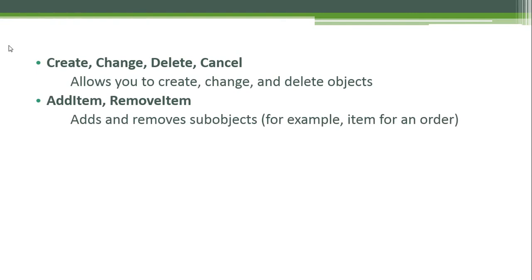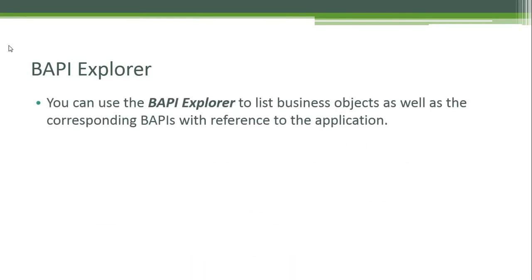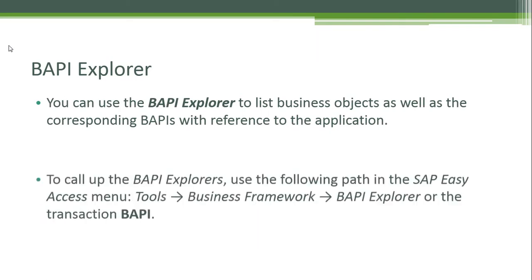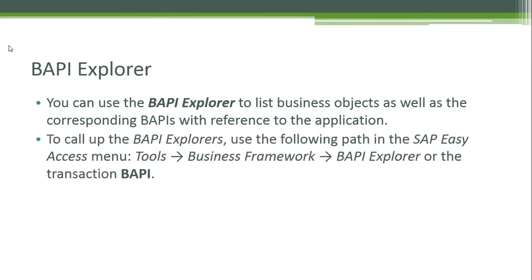You can use the BAPI Explorer to list business objects as well as the corresponding BAPIs with reference to the application. To call up the BAPI Explorer, use the following path in the SAP Easy Access menu: Tools > Business Framework > BAPI Explorer. Or you can use the transaction code BAPI.